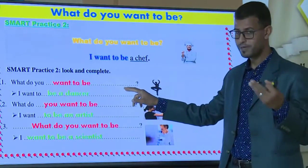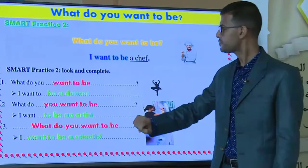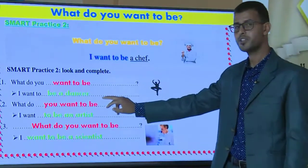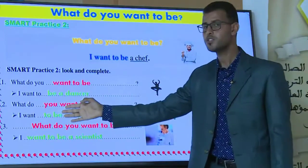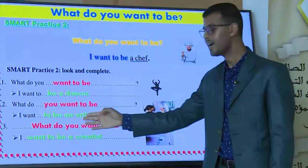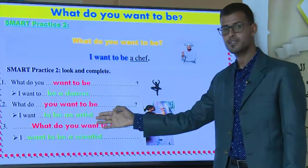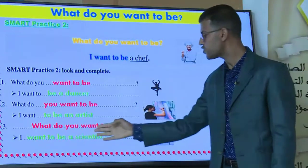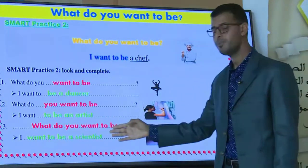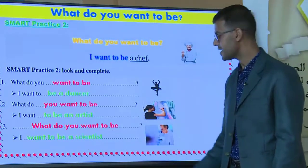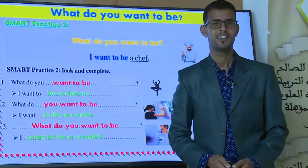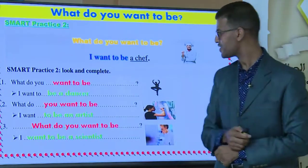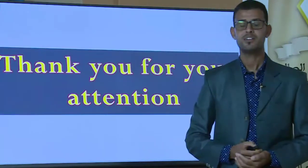Let us read these questions and answers together. What do you want to be? I want to be a dancer. What do you want to be? I want to be an artist. What do you want to be? I want to be a scientist. And you — what do you want to be? Thank you so much for watching. I hope you understood the lesson. See you soon!